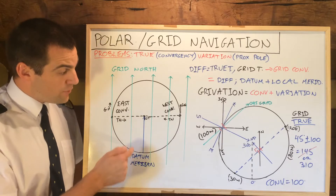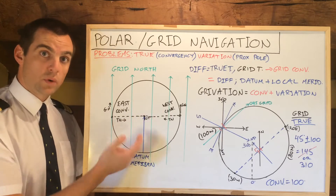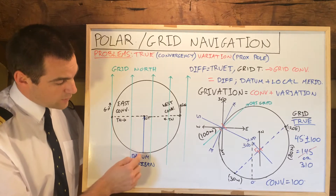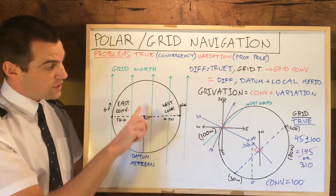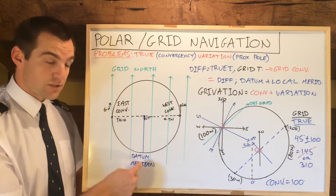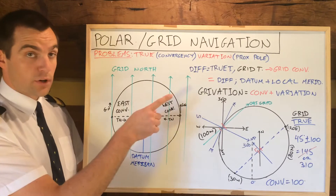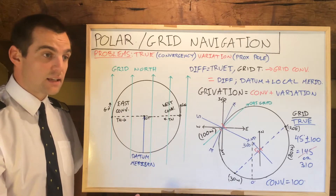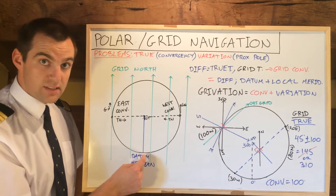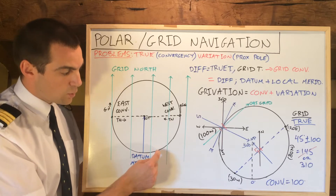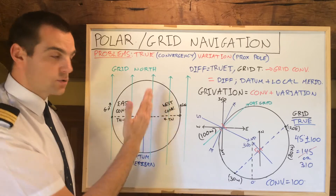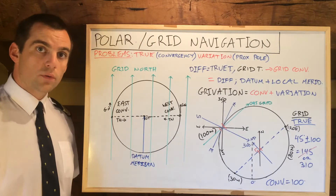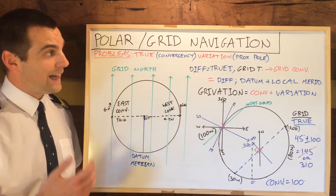The datum meridian is the meridian which lines up with grid north. In this case, I've drawn the Greenwich meridian at 0, and I've aligned grid north with that meridian. The reference datum doesn't necessarily have to be the Greenwich one — you could have a chart where the reference datum states it's from 20 east, which would shift grid north 20 degrees to the left. For simplicity today, I'm just going to line up grid north with the Greenwich meridian.